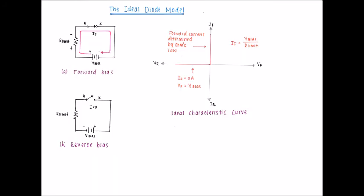For the practical diode model, we add the barrier potential to the ideal switch model while the dynamic resistance is neglected. From the figure, the forward voltage for silicon is 0.7V while it is 0.3V for germanium. The forward current is determined by applying Kirchhoff's voltage law to the circuit. Forward bias is equivalent to a closed switch in series with a small equivalent voltage source equal to the barrier potential.